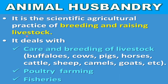We can say animal husbandry deals with care and breeding of livestock like buffalos, cows, pigs, horses, cattle, sheep, camels, goats, etc. It also includes poultry farming and fisheries.